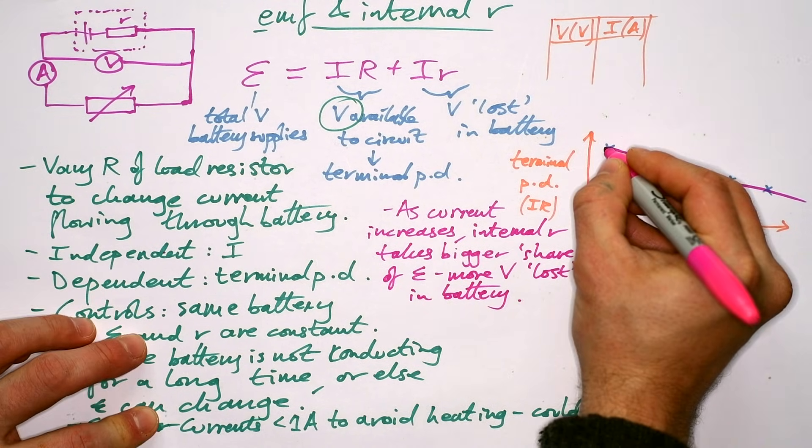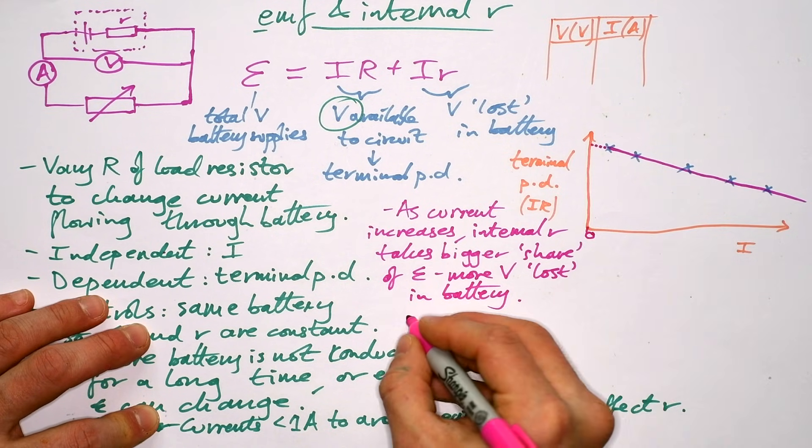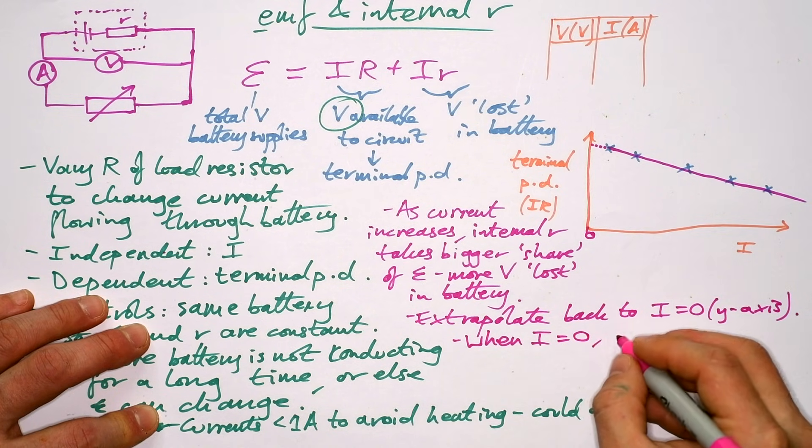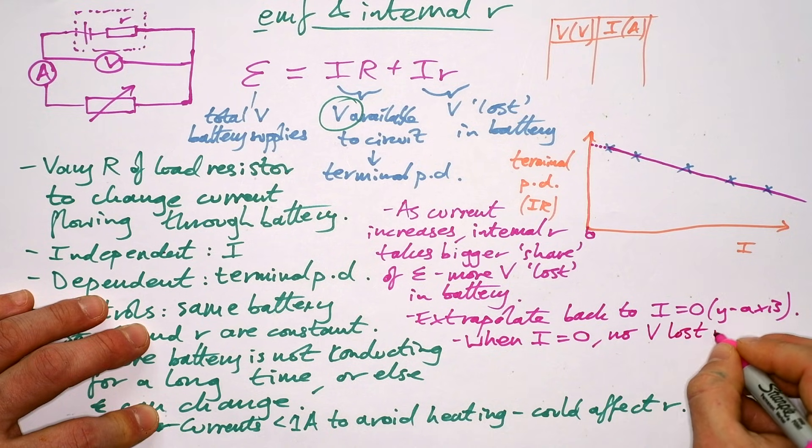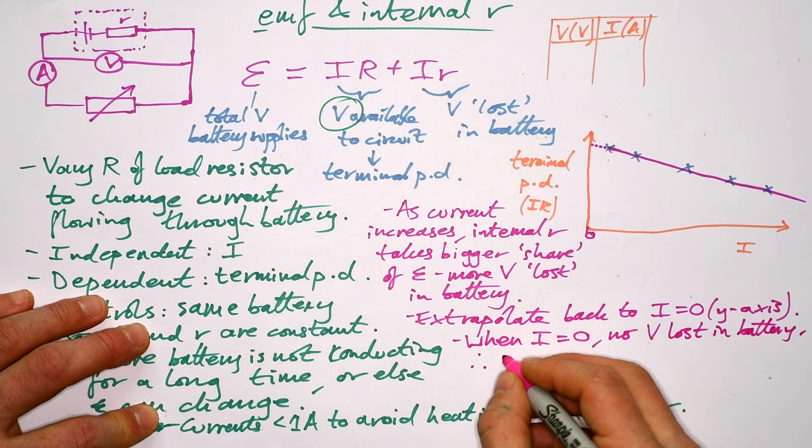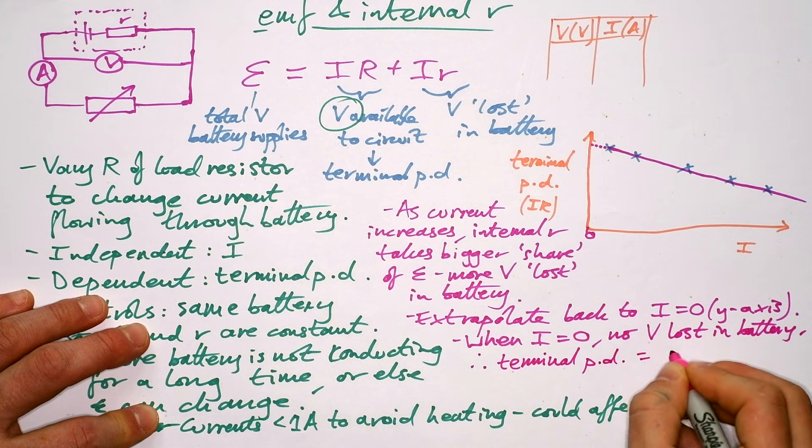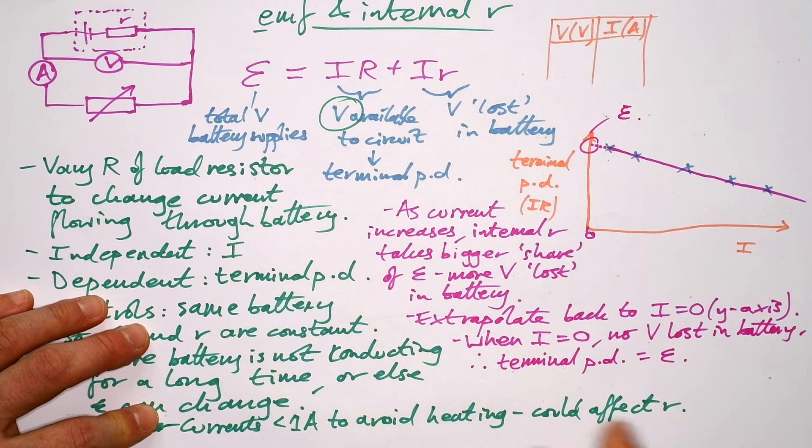What we can then do is extrapolate our line back to a current of zero amps. So we take our line. So when there's no current flowing, that means that no PD, no voltage lost in battery. So theoretically, when that's the case, the terminal PD is equal to the EMF. So that gives us the EMF of our battery.